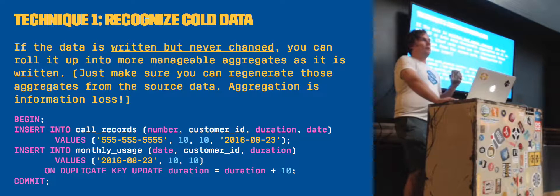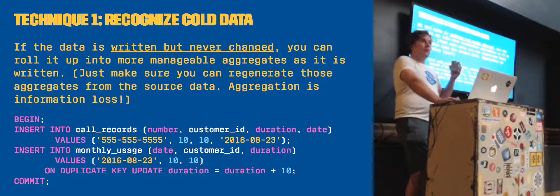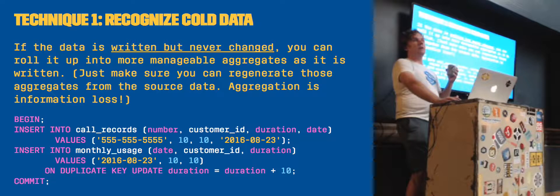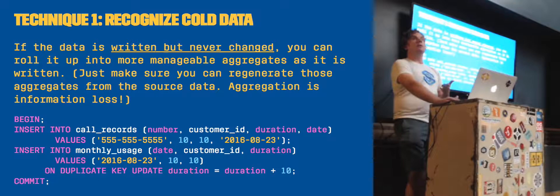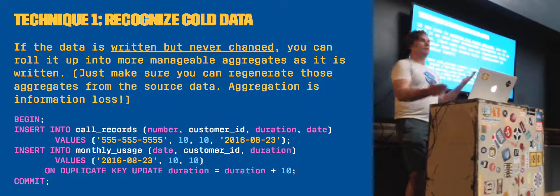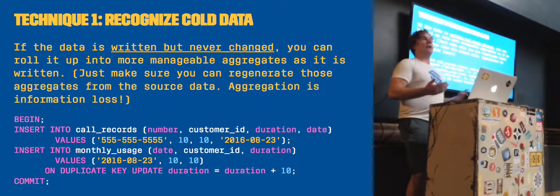Things you can do to recognize constraints and cut down the problem: The first one is recognize cold data. Call records at a phone company are a perfect example - they're basically events in time. Events in time never change and never need to be written to again. Once it happened, it can never happen again. You can recognize that it's cold data and aggregate it.